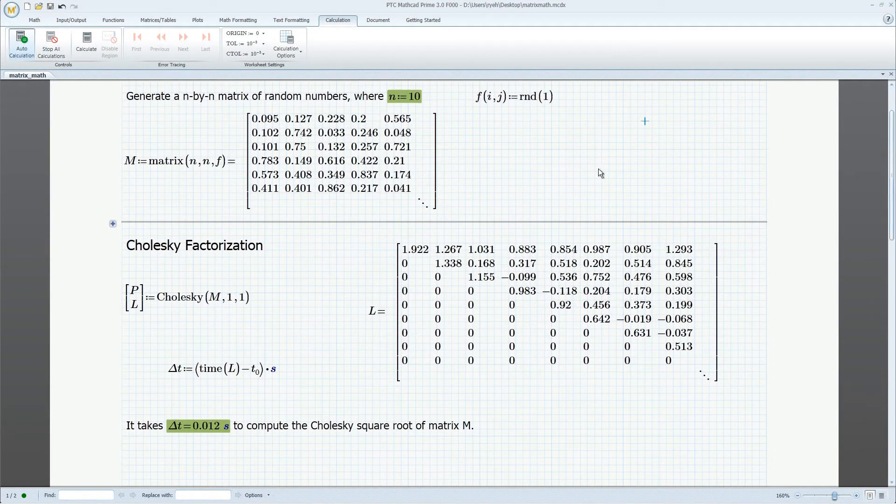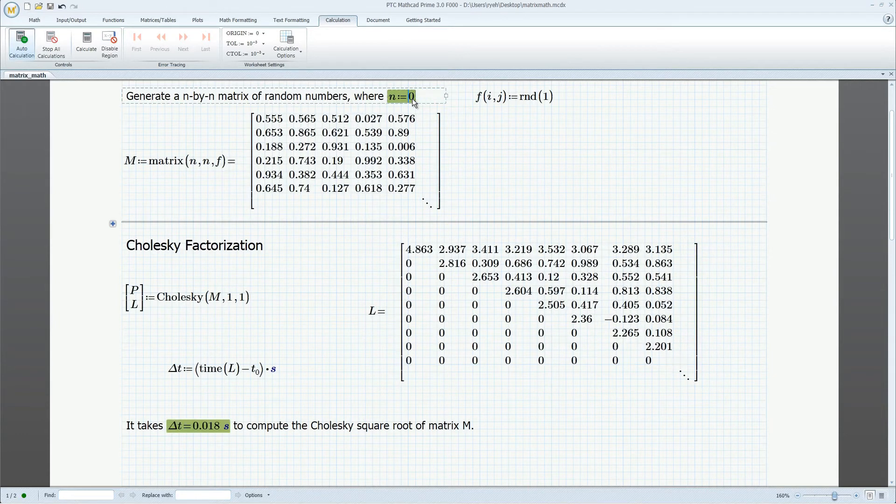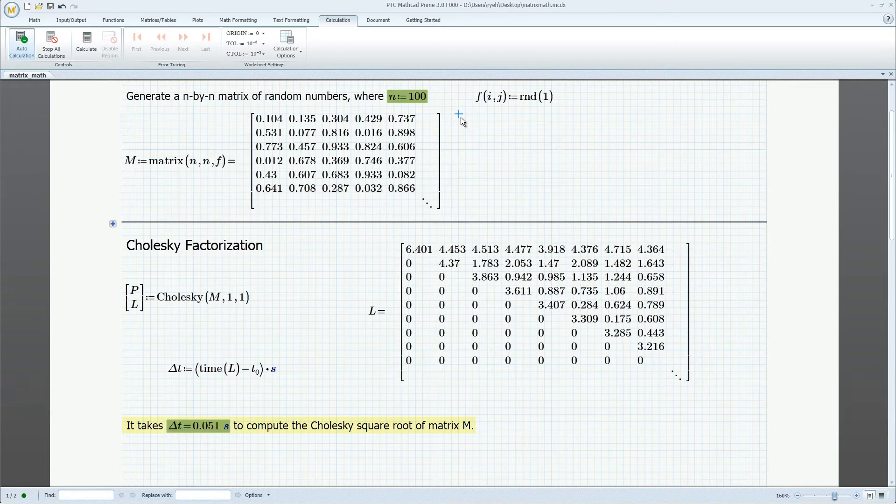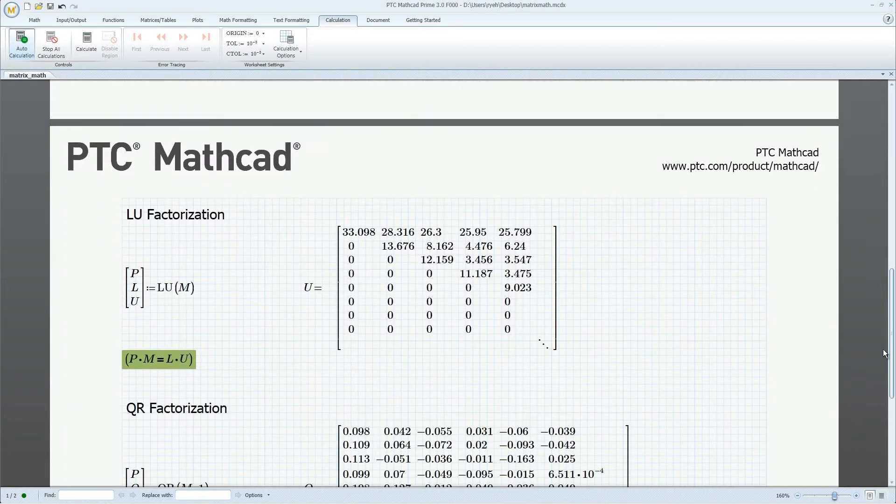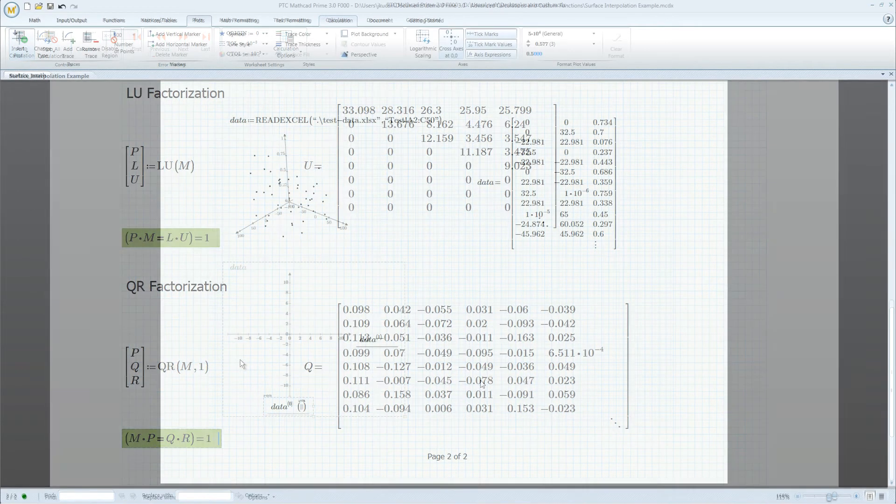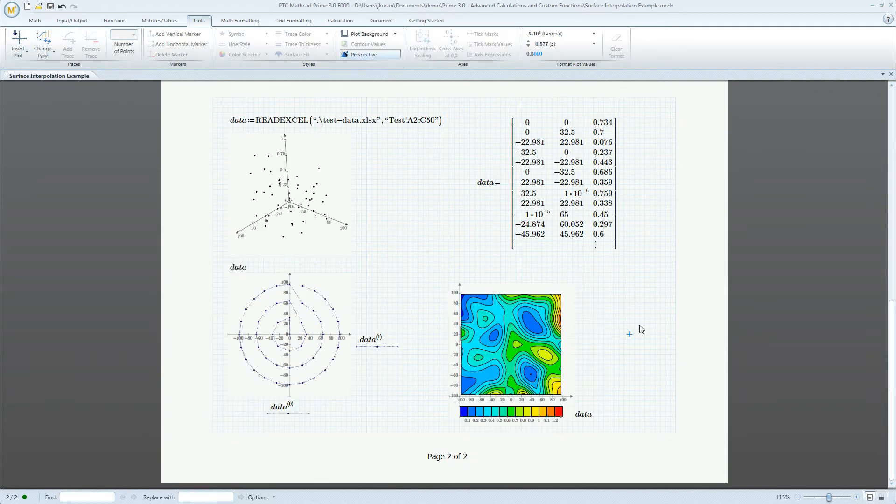PTC Mathcad Prime 3.0 continues to enhance numeric calculation capabilities. New matrix decomposition functions have been added, which are up to 100 times faster, provide extended capabilities such as pivoting and complex number support, and return the result in an easier-to-work-with format. A new general surface fitting and interpolation function allows you to visualize an unordered set of 3D points as a contour plot.